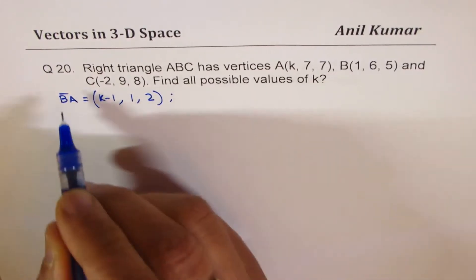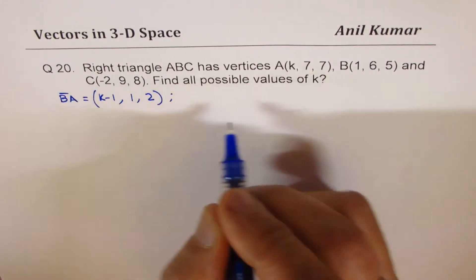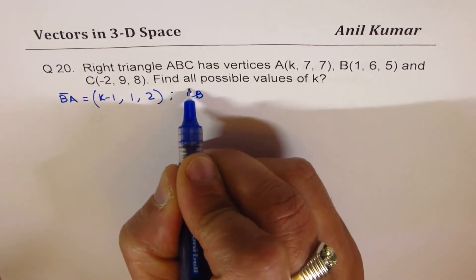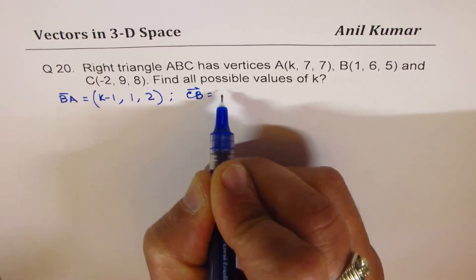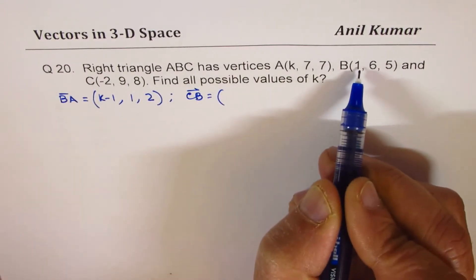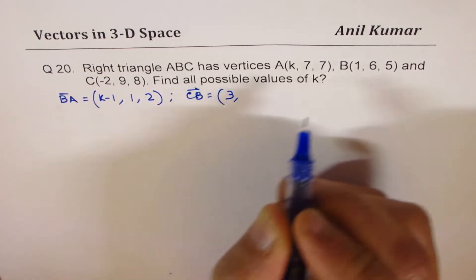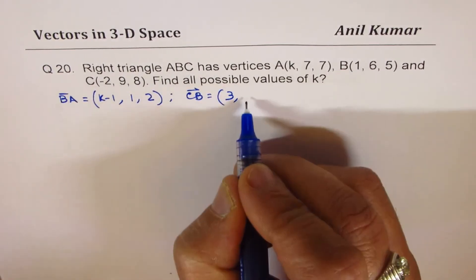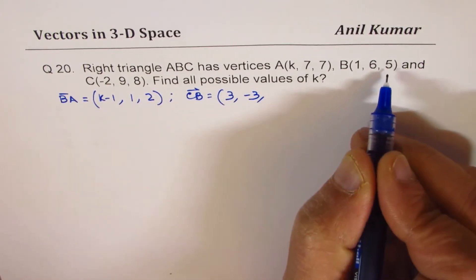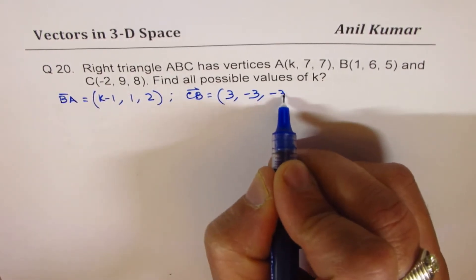Now what is CB? So CB is going to be C to B, so we have 1 minus −2 which becomes plus 3, 6 minus 9 is minus 3, and 5 minus 8 is again minus 3.